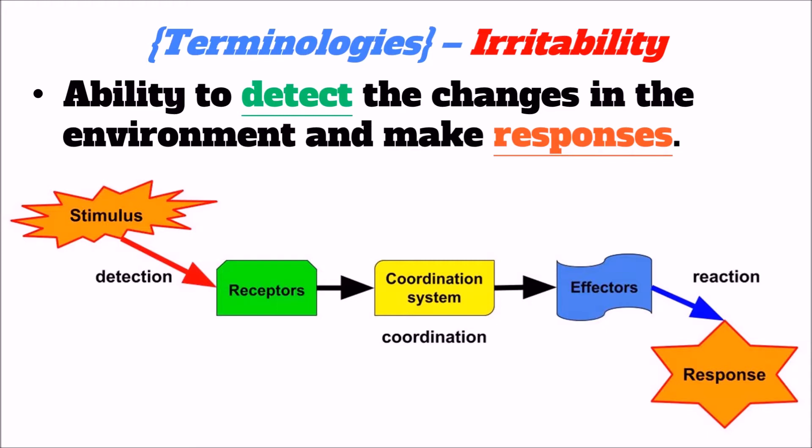I would like to use human beings as an example. Firstly, the receptors detect the stimuli like light or sound and generate nerve impulses. Then our nervous system acts as the coordinating system to analyze the nerve impulses. Finally, the nervous system will send nerve impulses to the effectors such as muscles to do the bodily reaction. One reminder is that the coordination system can also be the endocrine system and the effectors can be the target organs in our body.